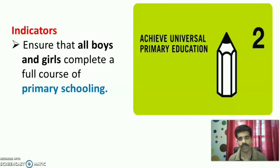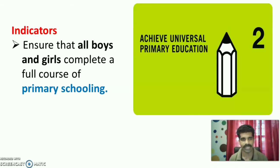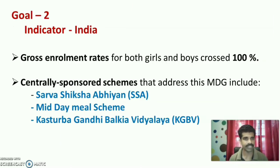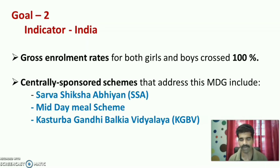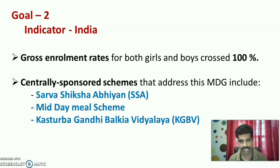Goal 2 is to achieve universal primary education. The indicator is to ensure that all boys and girls complete a full course of primary schooling. For India, gross enrollment rates for both girls and boys crossed 100%. Centrally sponsored schemes addressing this goal include Sarva Shiksha Abhiyan (SSA), the Midday Meal Scheme, and Kasturba Gandhi Balika Vidyalaya (KGBV).